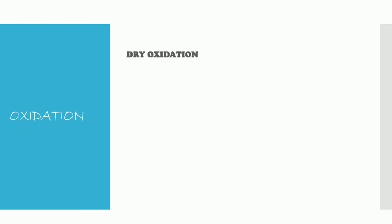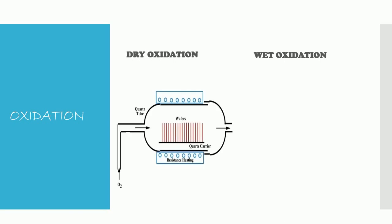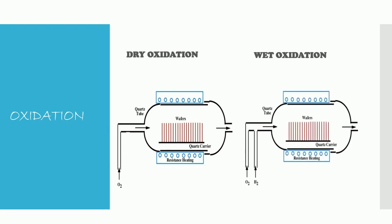The next step is oxidation. This step is used to grow a layer of silicon dioxide over the surface of the wafer. Oxidation can be either dry oxidation or wet oxidation. In dry oxidation the oxidizing environment consists of pure oxygen, while in wet oxidation the oxidizing environment consists of water vapors. The wafers are heated at high temperatures in the oxidizing environment, which leaves a layer of silicon oxide on the surface of the wafers.